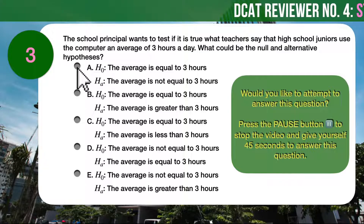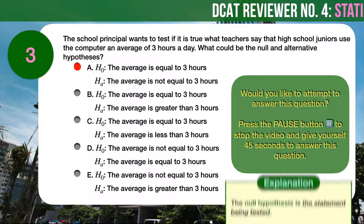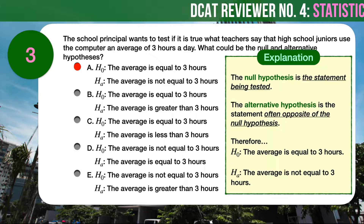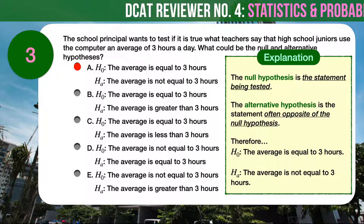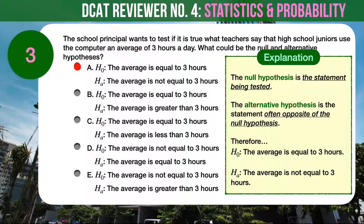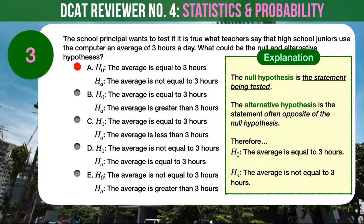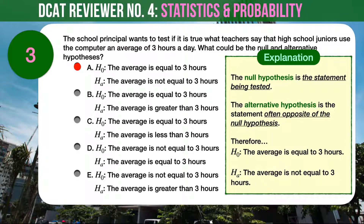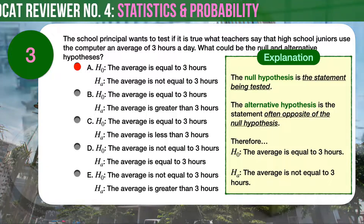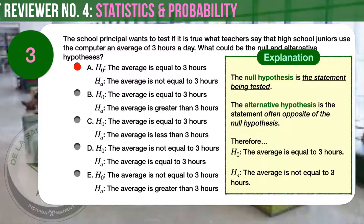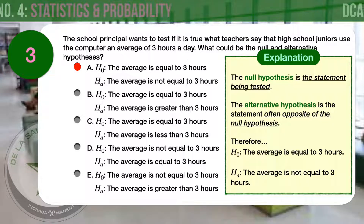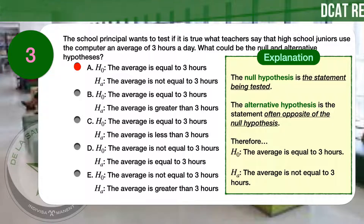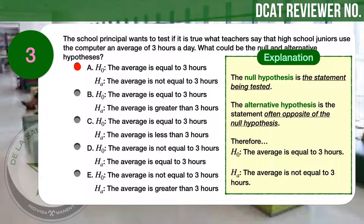The correct answer is A. The null hypothesis is the statement being tested. The alternative hypothesis is the statement often opposite of the null hypothesis. Therefore, the null hypothesis is the average is equal to 3 hours, and the alternative hypothesis is the average is not equal to 3 hours.